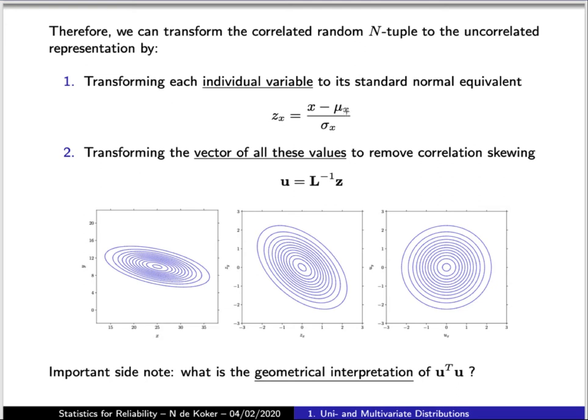We first take each individual variable and transform it to its standard normal equivalent, which is to say we standardize the variable. And then we multiply the vector of standard normal variables with the inverse of our Cholesky matrix to account for correlation, and so we end up with an uncorrelated standard normal vector of variables.